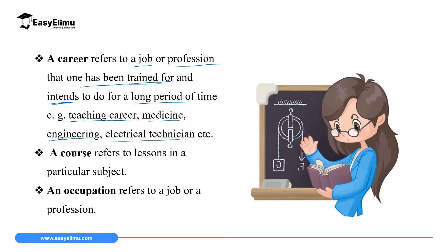A course refers to lessons in a particular subject — in this case, physics. The lessons you undertake in physics will eventually lead you to join a career in physics. After completing several courses over a long period of time, you join what we call an occupation. An occupation refers to a job or a profession. So the three terms — career, course, and occupation — are related: courses are lessons taken in a subject, after which you join a career at university or college, train for a long period, and then pursue that occupation.